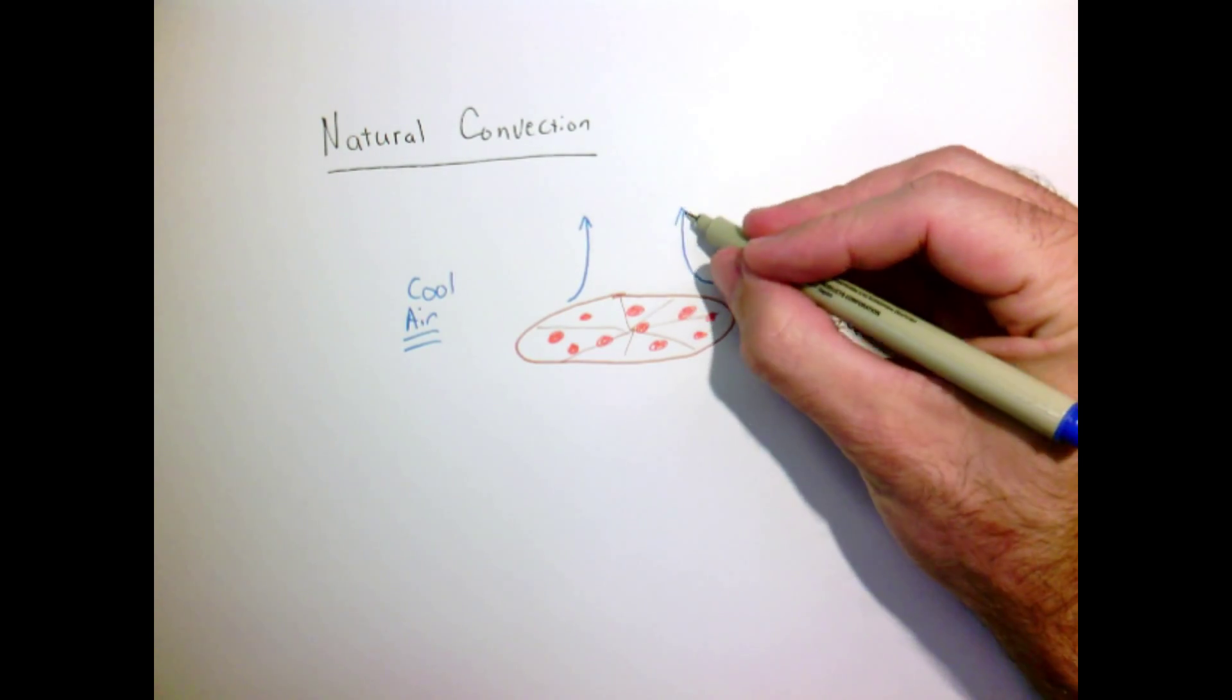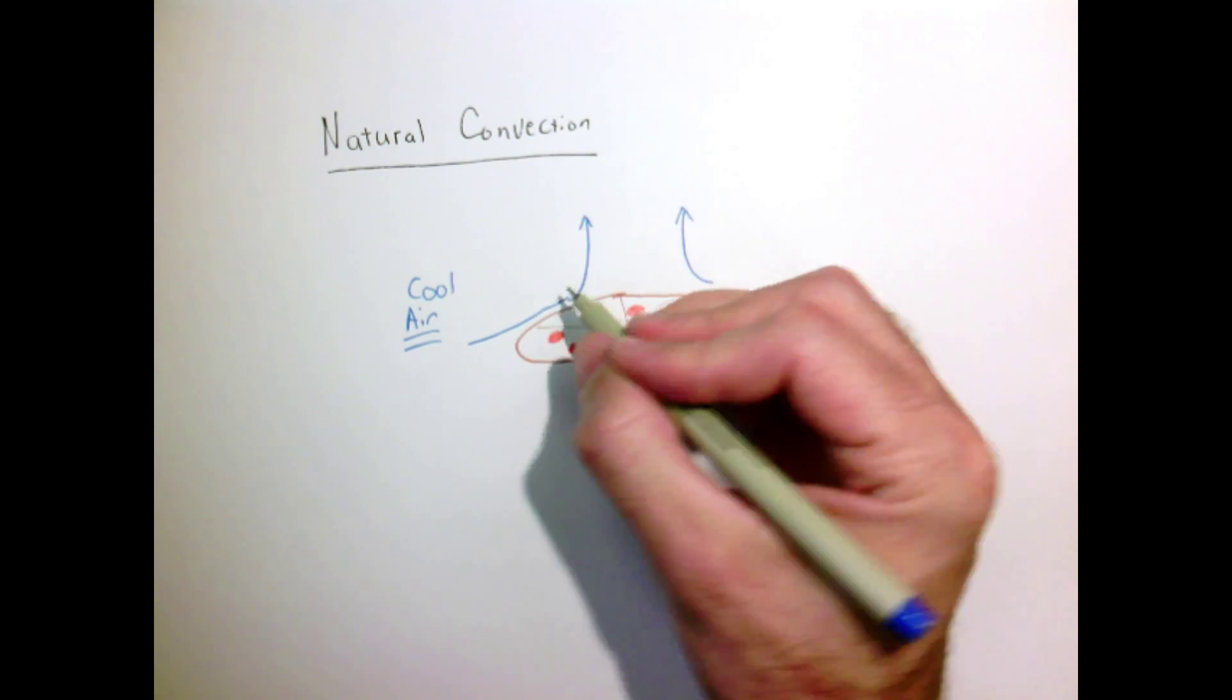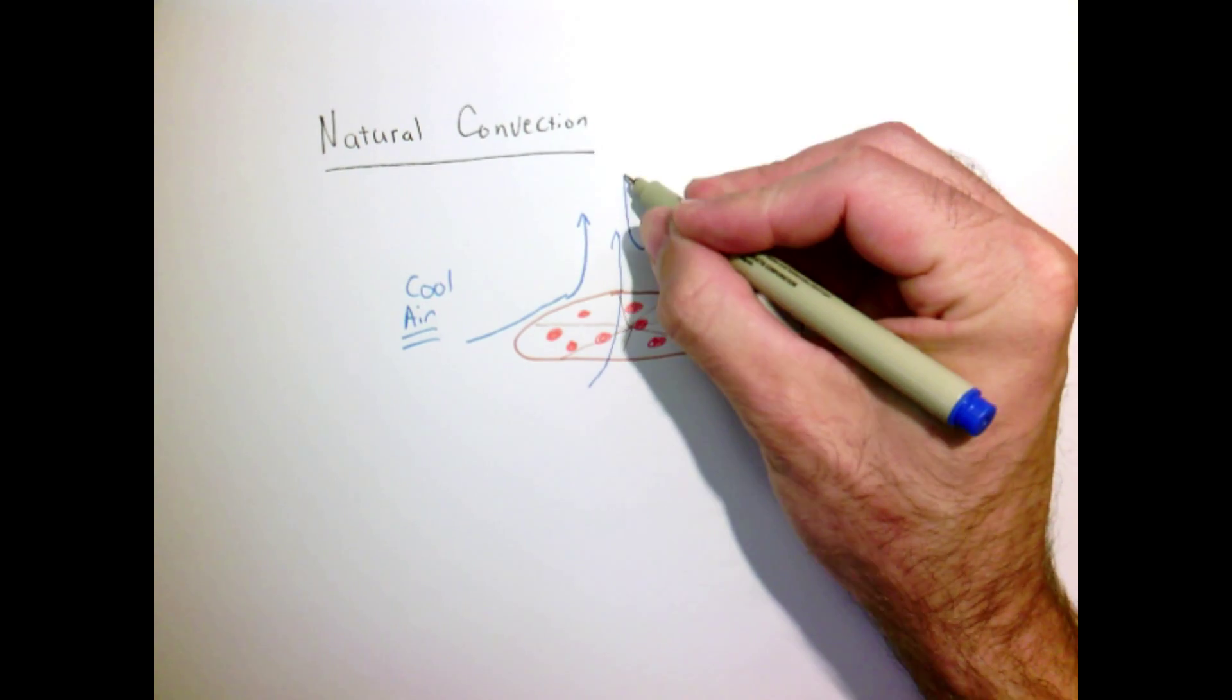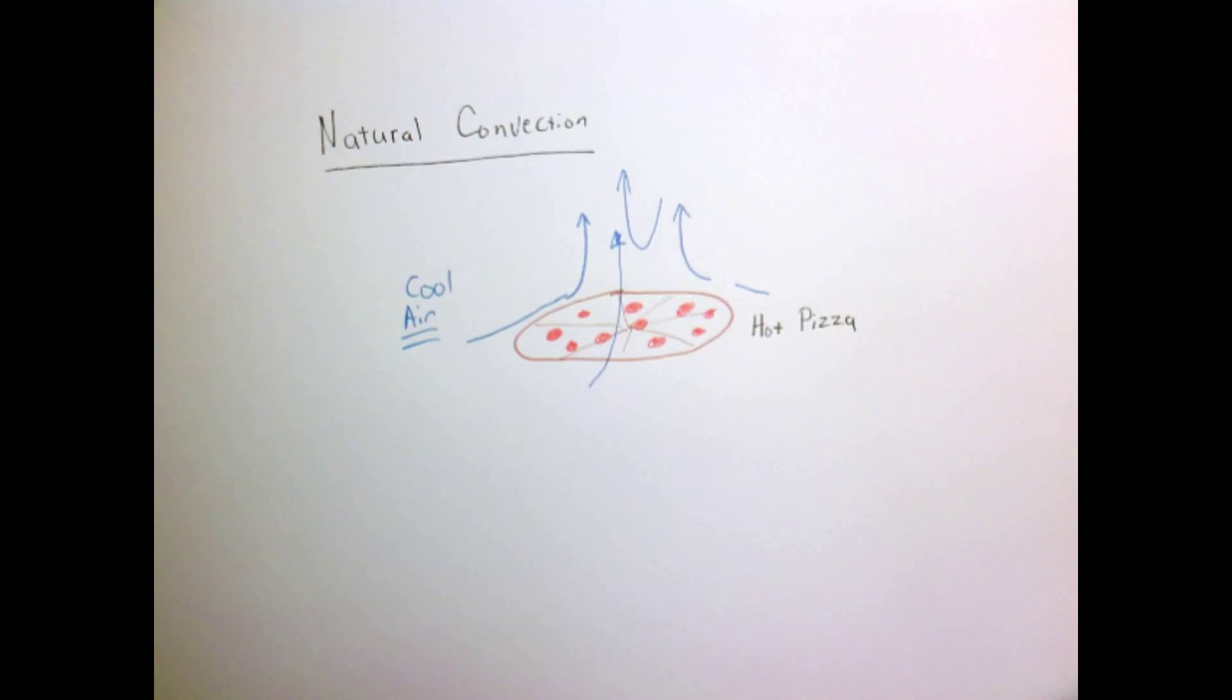As the air above the pizza drifts upwards, it's going to pull new cool fluid in from around it. From all sides, cool air is going to be pulled in and warm air is going to float up.